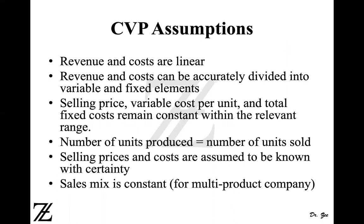There are some assumptions we need to keep in mind when we perform cost volume profit analysis. The first is that revenue and costs are linear. What it means is that you are not increasing or decreasing the selling price of a product as you sell more or fewer units, or as demand goes up or down. Similarly, you're not getting a quantity discount and prices are not increasing. If anything like that happens — a quantity discount or the selling price increases or decreases — then it doesn't stay linear anymore; it becomes curvilinear. So we need to avoid that.